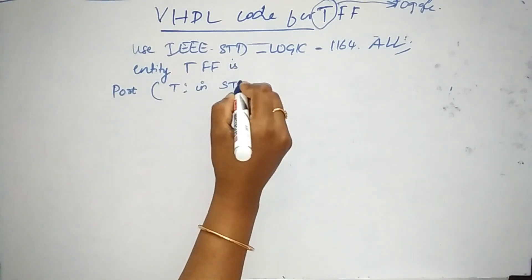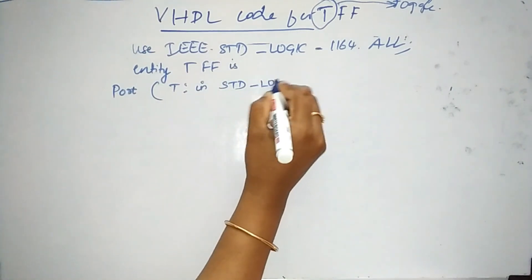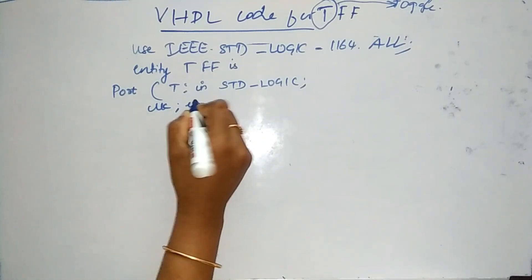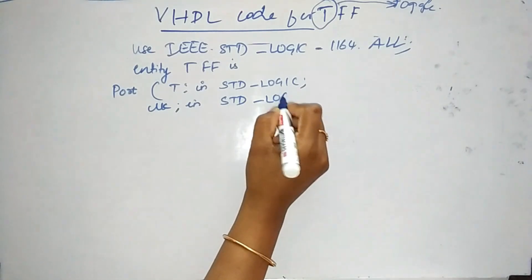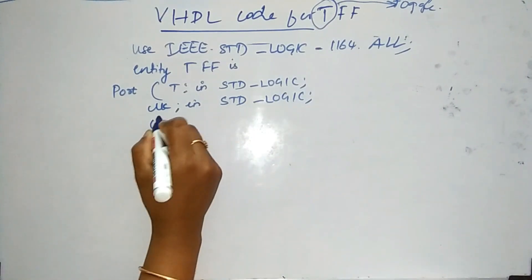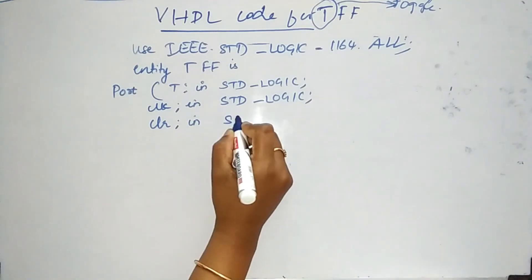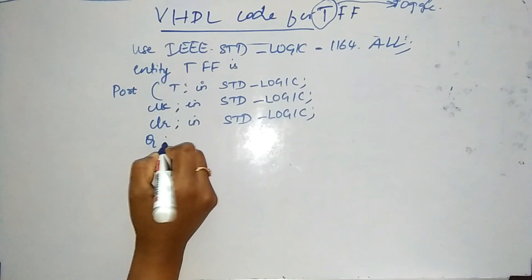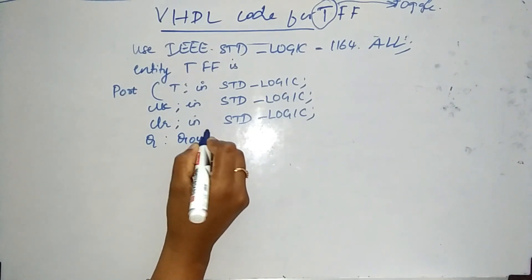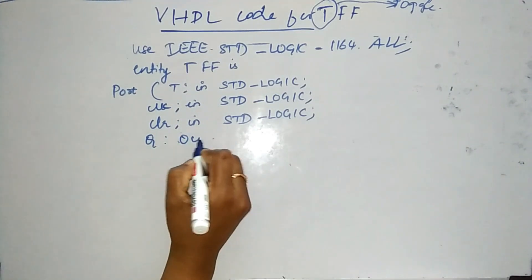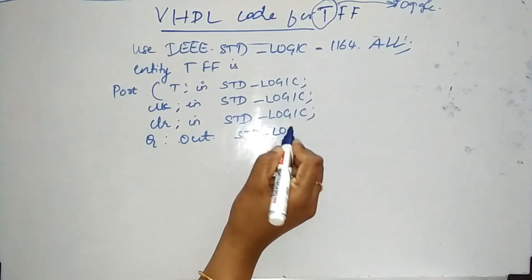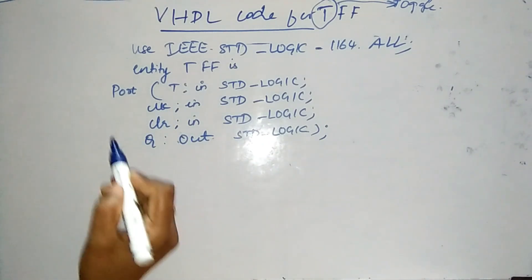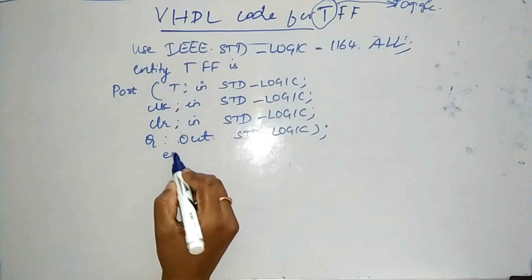So T is our input here, STD logic, and clock is our input. And of course, clear or reset is our input, and our output is Q, which is our output under the function STD logic. So I have included all my inputs as well as output.